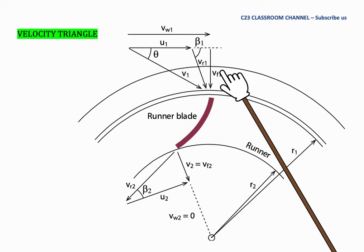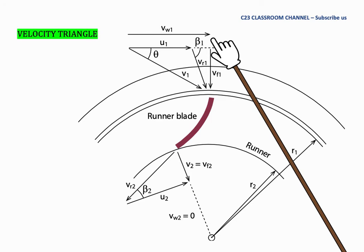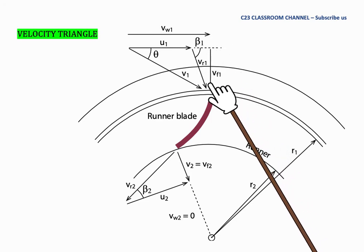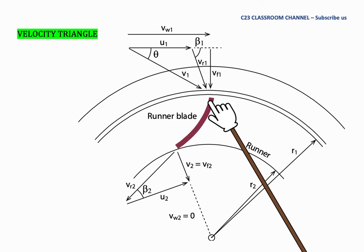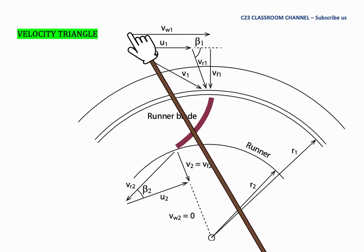Then we draw the theoretical flow for the Francis turbine. We draw the flow velocity Vf1 like this, parallel with the radial line here. And then we draw Vr1 like this.